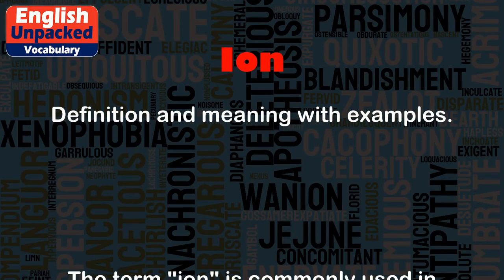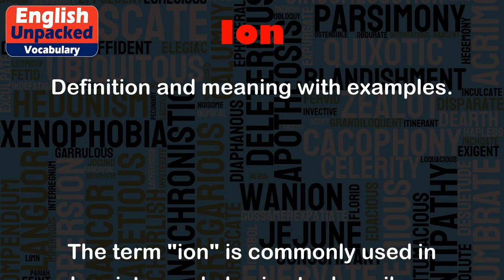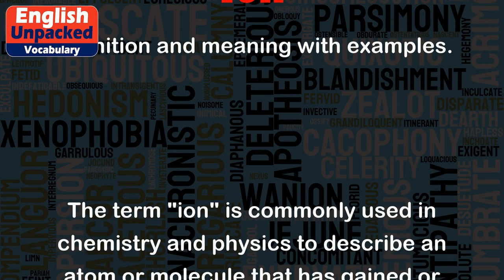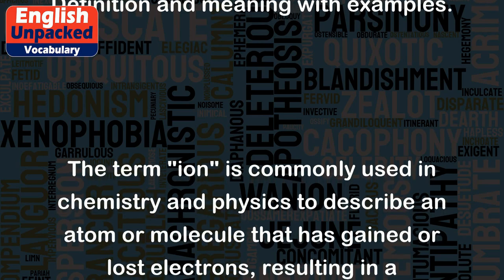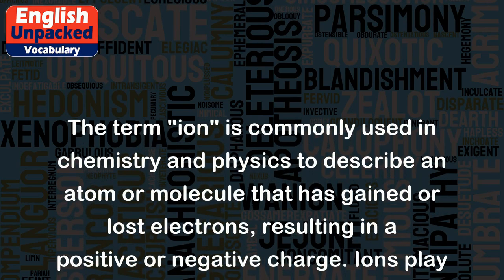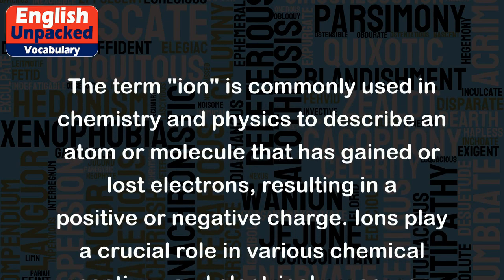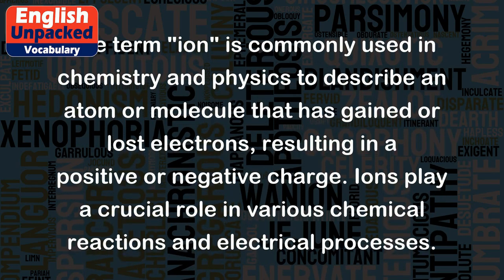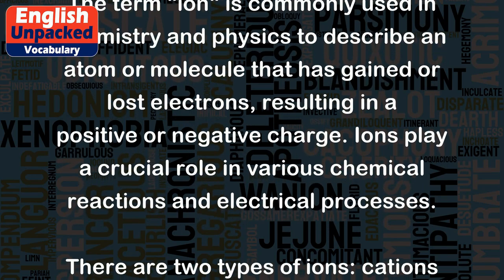Ion. The term ion is commonly used in chemistry and physics to describe an atom or molecule that has gained or lost electrons, resulting in a positive or negative charge. Ions play a crucial role in various chemical reactions and electrical processes.